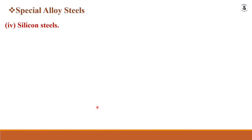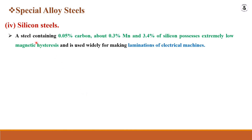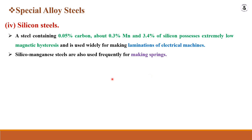Silicon steel is another special alloy steel. It contains 0.05% carbon, about 0.3% manganese, and 3.4% silicon. It has extremely low magnetic hysteresis and is widely used for making laminations in electrical machines. Silico-manganese steels are also frequently used for making spring materials.